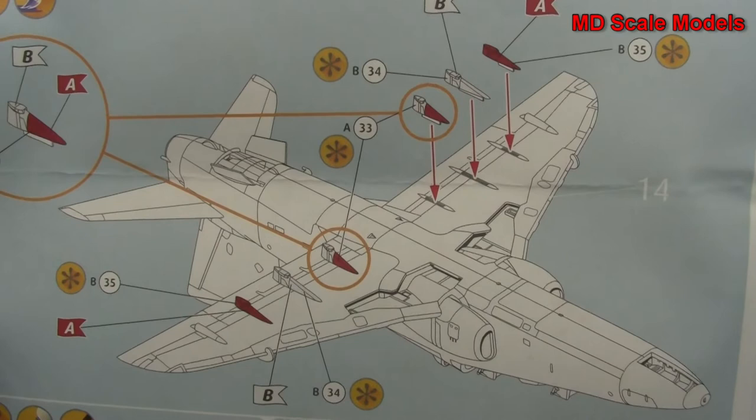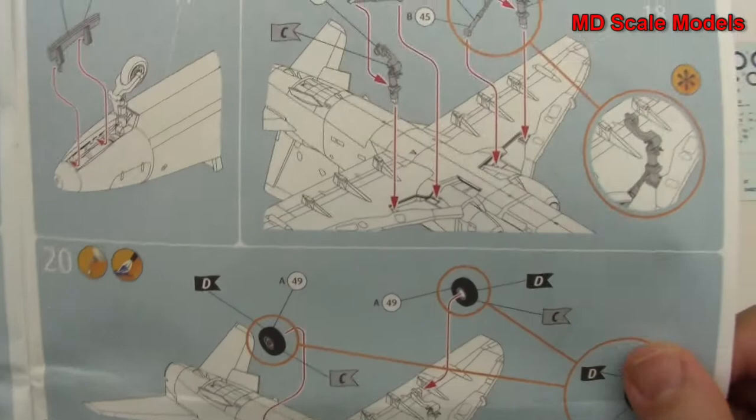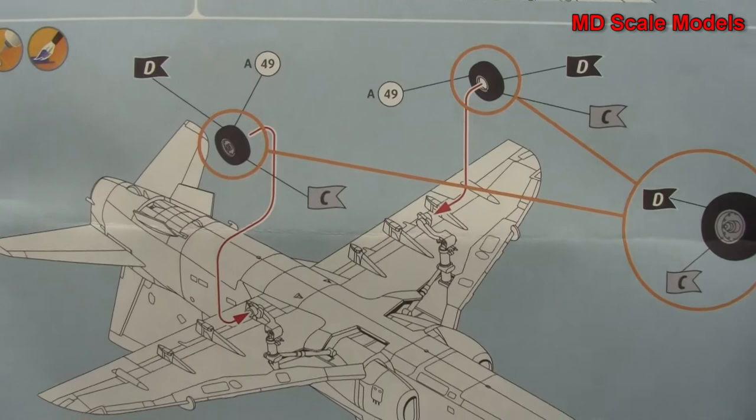We start to build the wheels, we start to build the main gear, nose wheel, and then wheel well covers and main gear there. Here we've got our wheels and tires going on and the rest of the wheel well covers.